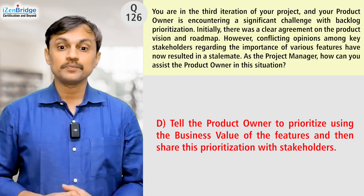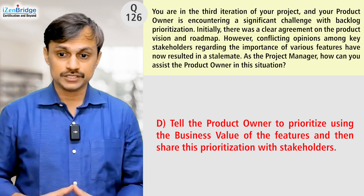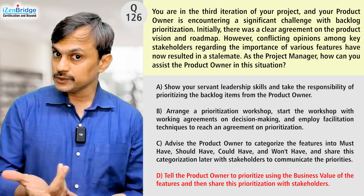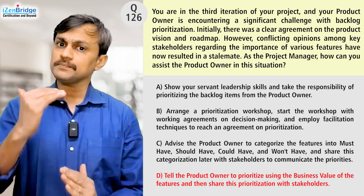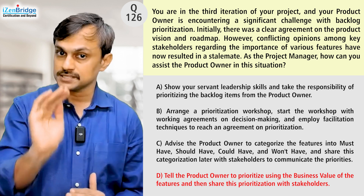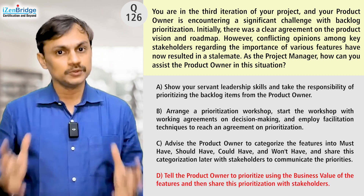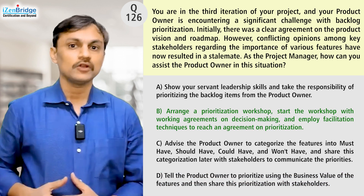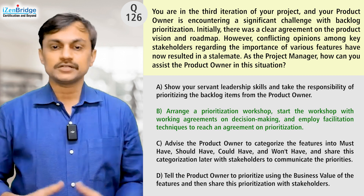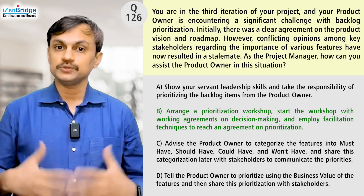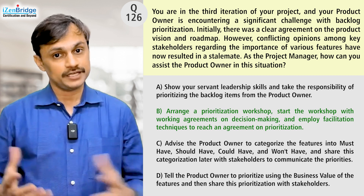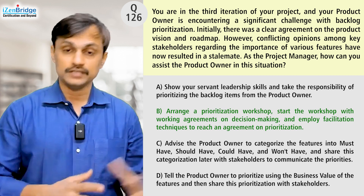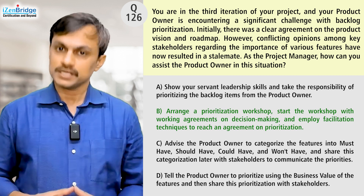Option D: tell the product owner to prioritize using business value of the features and then share the prioritization with the stakeholders. Again, the keyword 'business value' is there, but it faces the same problem as option C — it focuses on the product owner doing the job and just sharing with the stakeholder. Looking at the possible options, option B looks good. There could be other better options that focus on coaching and mentoring the product owner on various prioritization and facilitation techniques, and letting him run the show if he feels confident, or you can be there to assist.